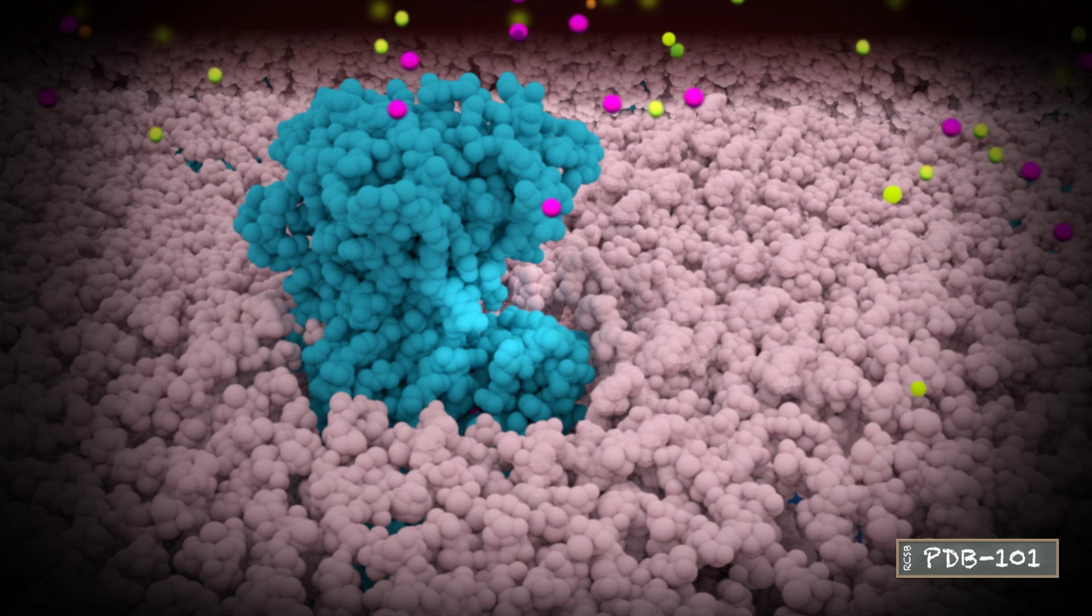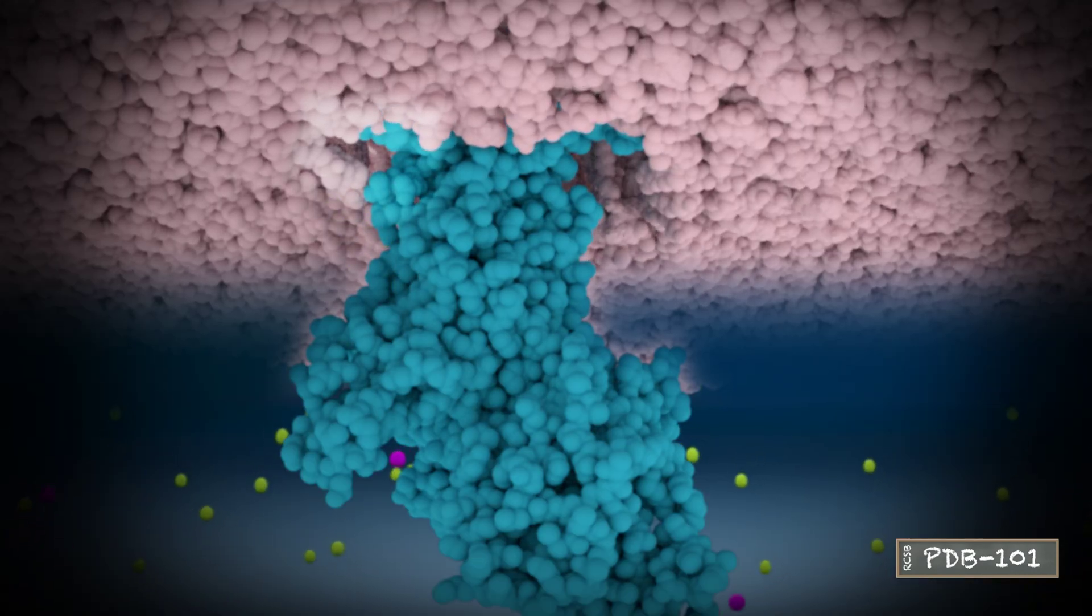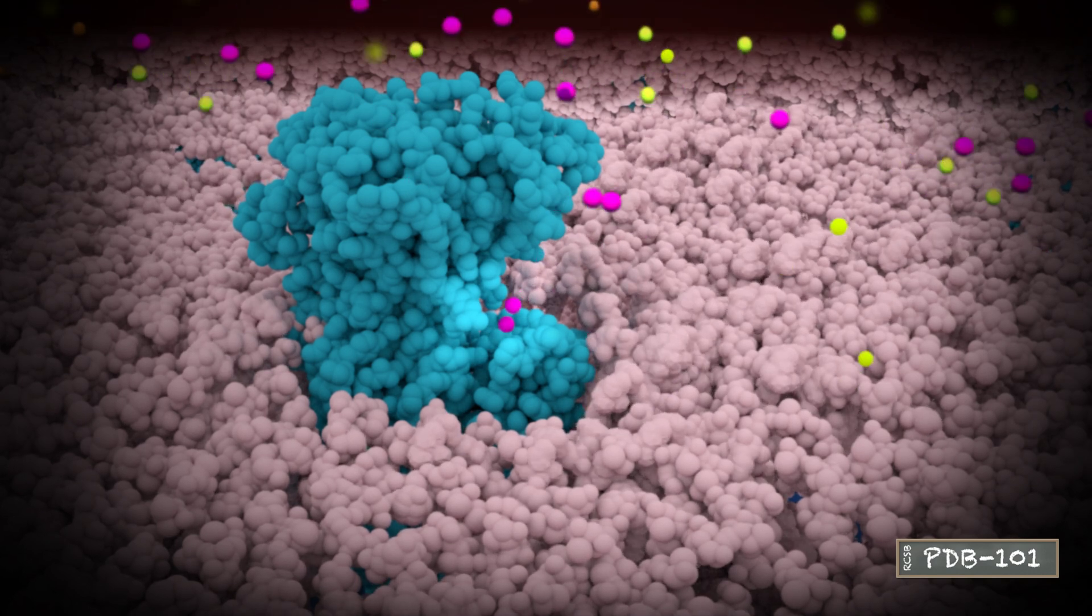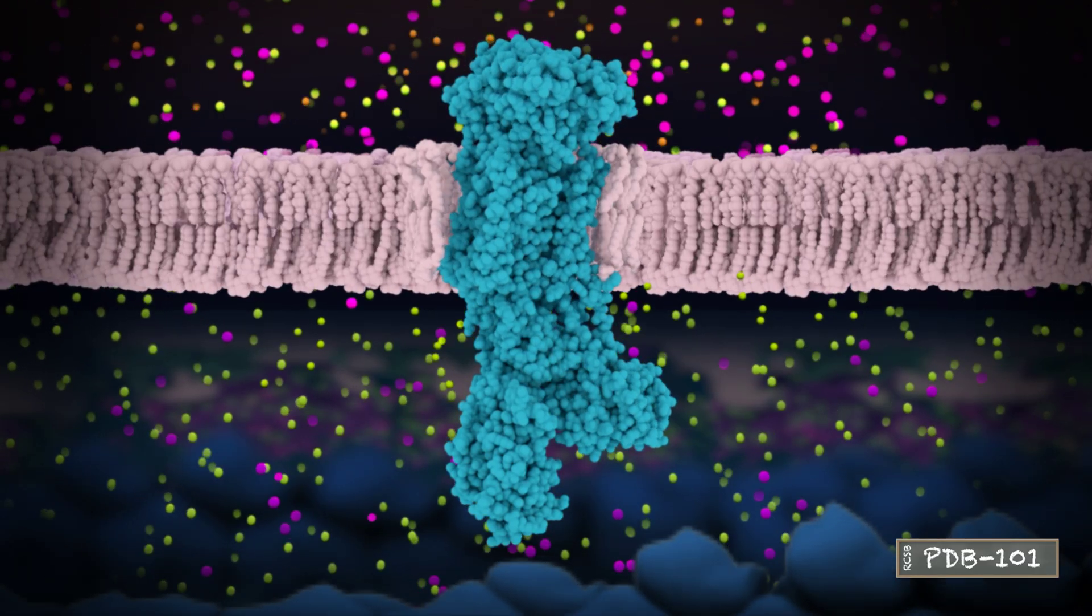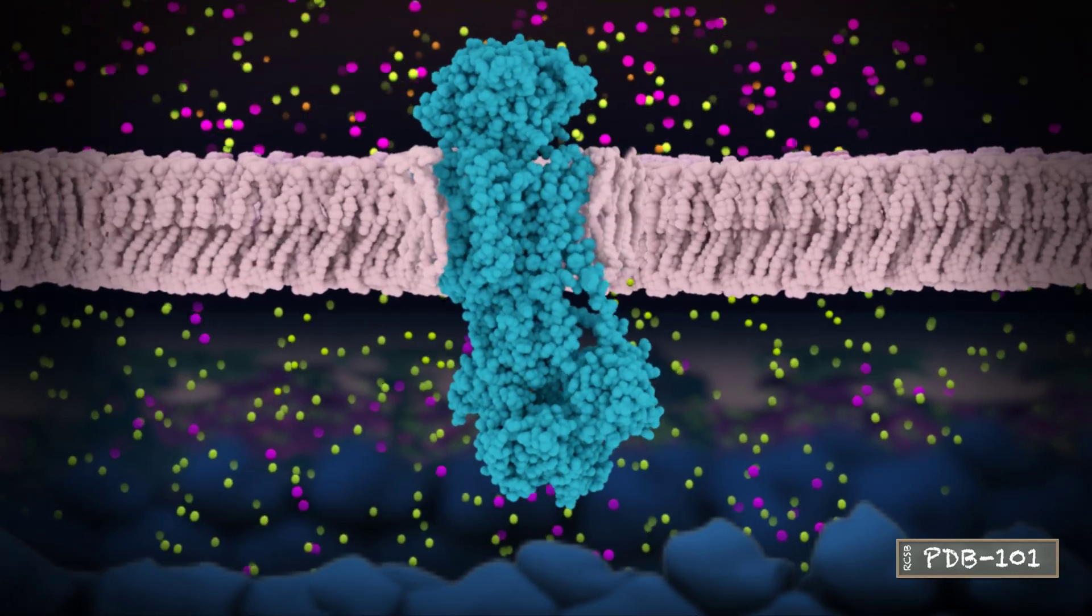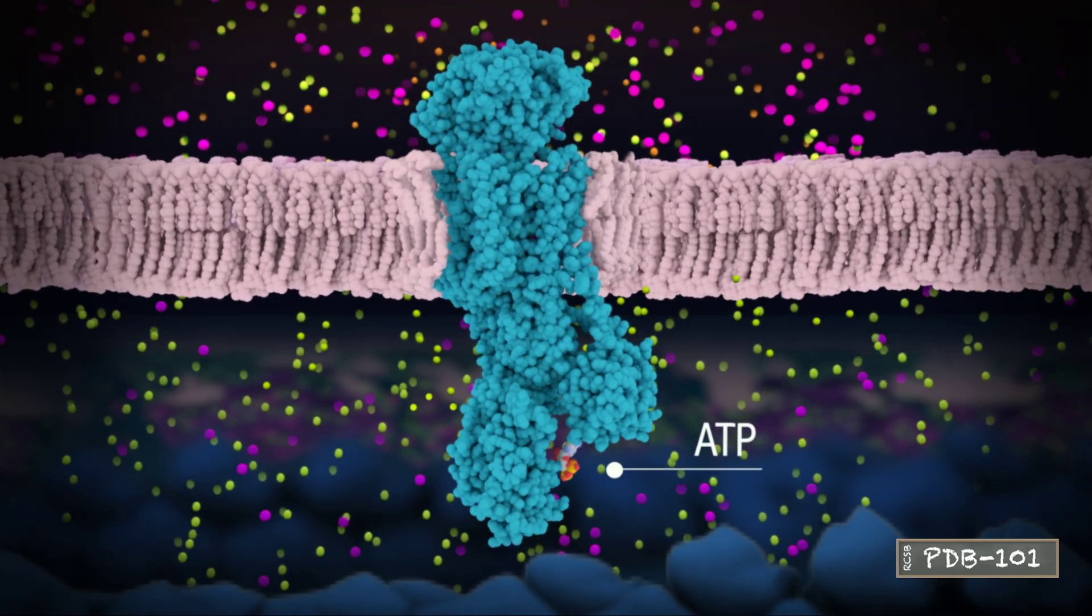With each pumping cycle, this transport protein moves two potassium ions back into the cell and three sodium ions out of the cell. Because the pump moves these ions against their concentration gradients, it requires the energy of one ATP molecule for each cycle.